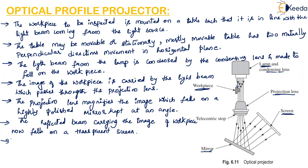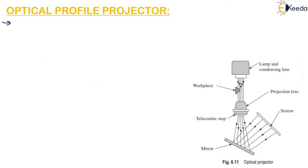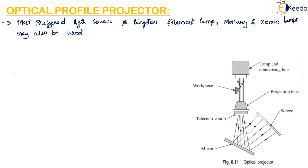To get sharp and clear images we have to select high quality optical elements and lamps, and mount them at the right location — this ensures accuracy in measurement. If the lighting source is not proper, we will not obtain sharp and clear images and the measurement will be inaccurate. The most preferred light source is the tungsten filament lamp, though mercury and xenon lamps are also used sometimes.